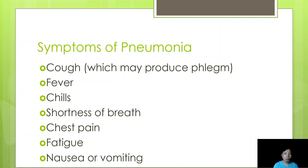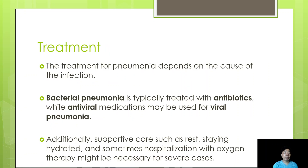Common symptoms of pneumonia include cough — in most cases accompanied by phlegm — fever possibly with chills, shortness of breath, chest pain, fatigue, and even nausea or vomiting.